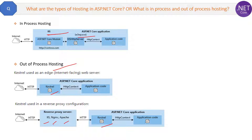Nginx is used for Node.js applications and Apache is used for Java applications. So these are the two types of hosting we have in .NET Core.